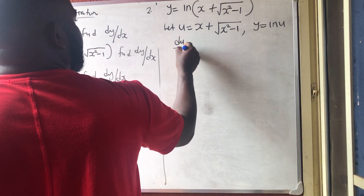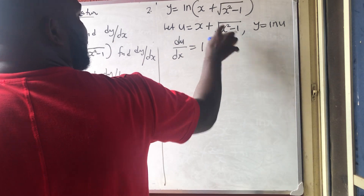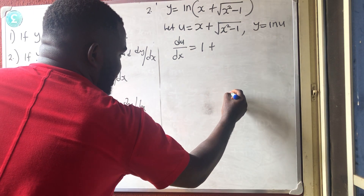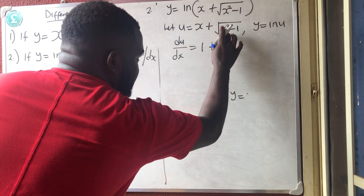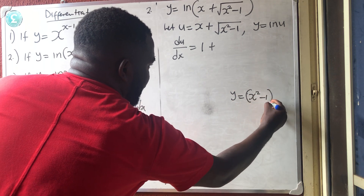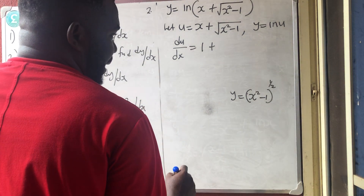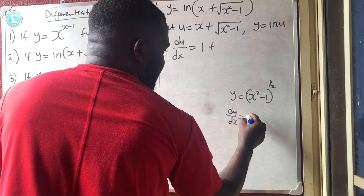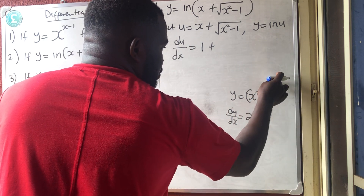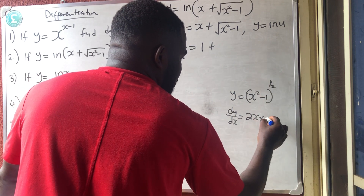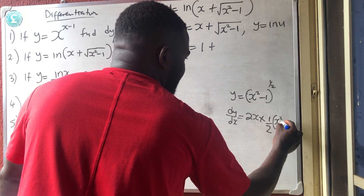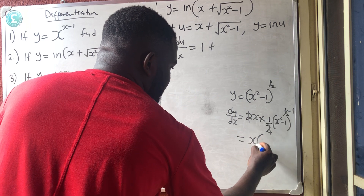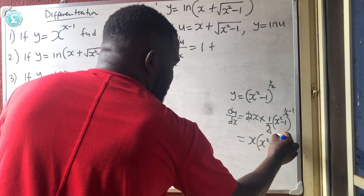Differentiating (x²−1)^(1/2) by chain rule: differentiate the bracket to get 2x, multiply by the power 1/2, and reduce the exponent by 1 to get (x²−1)^(−1/2). This simplifies to x over (x²−1)^(1/2), which means du/dx equals 1 plus x over the square root of x²−1.